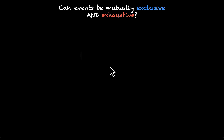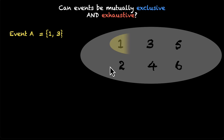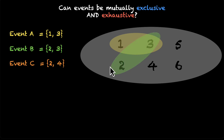Let's do this with an example. Let's say this is our sample space with sample points 1, 2, 3, 4, 5, and 6. Let's get some events going on. Event A is 1 and 3. Event B is 2 and 3. Event C is 2 and 4. And event D is 5 and 6.